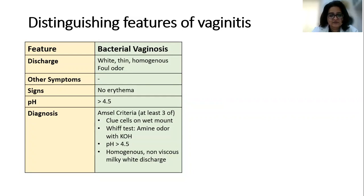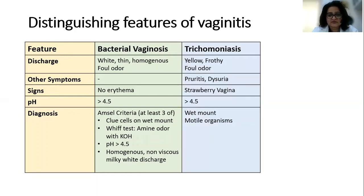Diagnosis is by Amsel criteria, where at least three out of four criteria must be present: clue cells on wet mount, a positive amine odor (whiff test) when KOH is added, pH more than 4.5, and homogeneous non-viscous milky-white discharge. If any three of these are present, it is diagnostic of bacterial vaginosis.